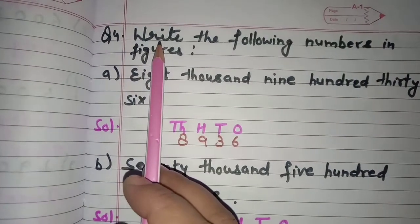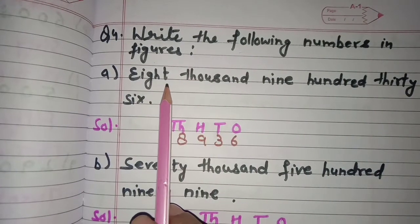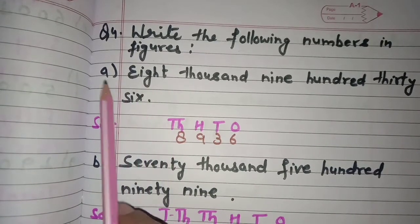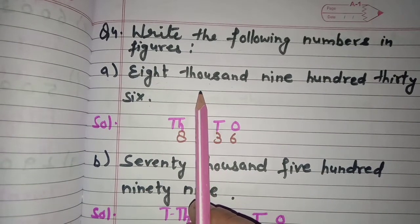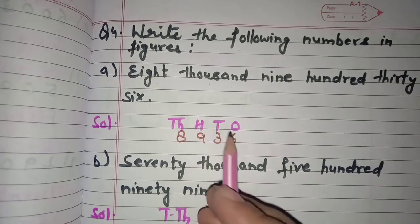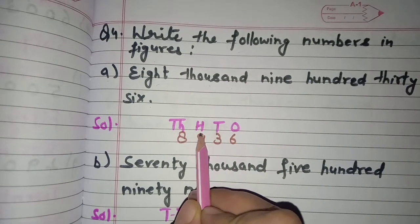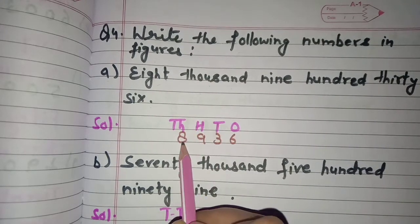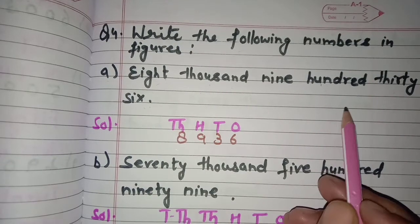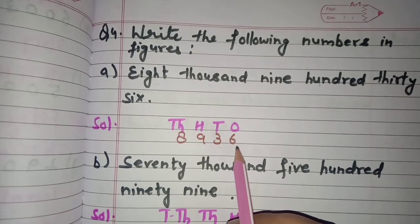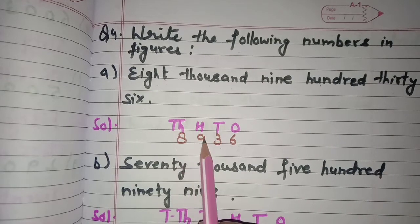Now next is question number 4: write the following numbers in figures. Here the number names are given and we have to write them in figures. First one is 8,936. 8,000 means the number is up to thousands place, so we write places from ones to thousands — ones, tens, hundreds, thousands. Then 8 under thousands, 9 under hundreds. 36 means 3 at tens and 6 at ones. The figure is 8,936.